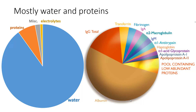So plasma is mostly water — it comes as no surprise. It's a liquid tissue and water is the universal solvent in our body. Water is going to make up about 90% of the volume of plasma. Of that remaining 10%, most of it — seven of the 10% — are comprised of proteins. That's what we're going to spend most of our time talking about in this video. The miscellaneous category includes things like lipoproteins, hormones, and wastes.